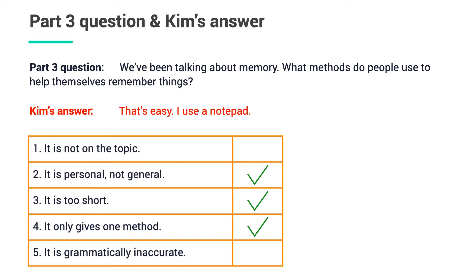The reason to tick box number 2 is that this answer is too personal, not general. Remember, you should give your opinions rather than talk about yourself in Speaking Part 3. In addition, box number 3 is ticked because this answer is too short. How can you prove your language ability by just saying those two short sentences? You may consider speaking more by giving reasons and examples, explaining something, comparing this to that, agreeing or disagreeing, etc. Finally, you should tick box number 4 because the answer only gives one method while the question asks for many — the examiner wants more than just one option. By talking about a few more approaches, you can at least extend your answer 3 times longer.